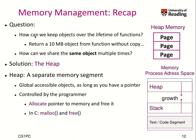Let's have a recap of why we need smart pointers, which means we need to look into memory management. What we want to do is keep objects over the lifetime of functions. When you return from a function, the stack frame of that function gets removed, so we have to do something smarter. It's not a good idea to copy 10 megabyte objects from functions as structures. The second problem is that we want to share the same object multiple times with different functions and users.